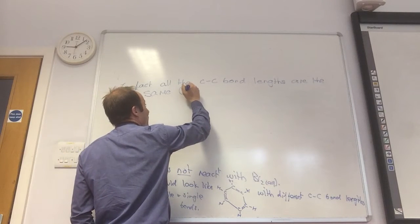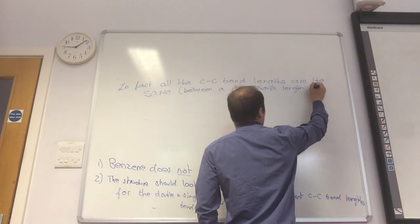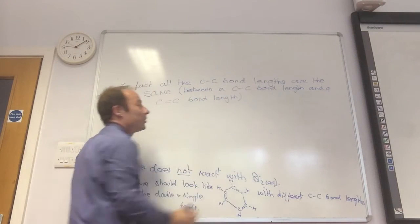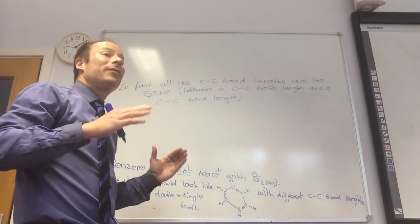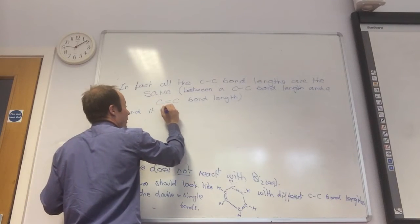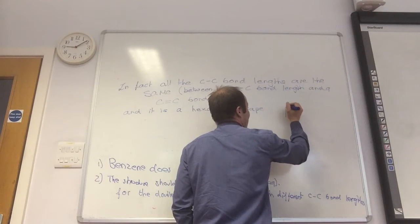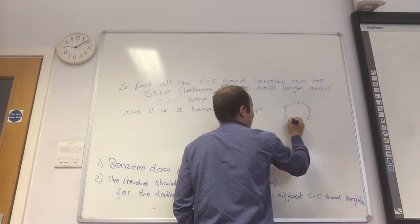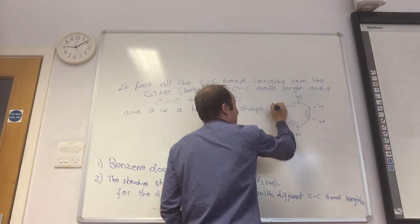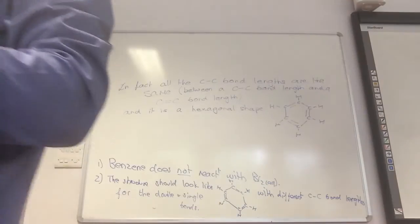And they're actually between a carbon-carbon bond length and a carbon-carbon double bond length. So they're not actually either one or the other, they're an average of the two. And it's a lovely hexagon shape. And it is a hexagon shape. So all of them are the same. So that was another problem with Kekule's structure that they came up with. They said it shouldn't look like that, but it actually looks like this. There's something wrong with his proposed structure.